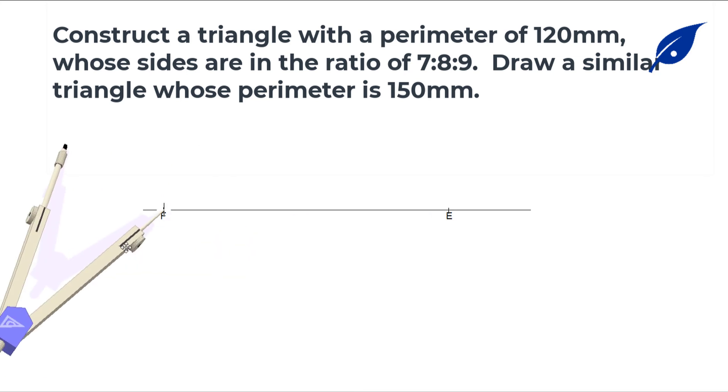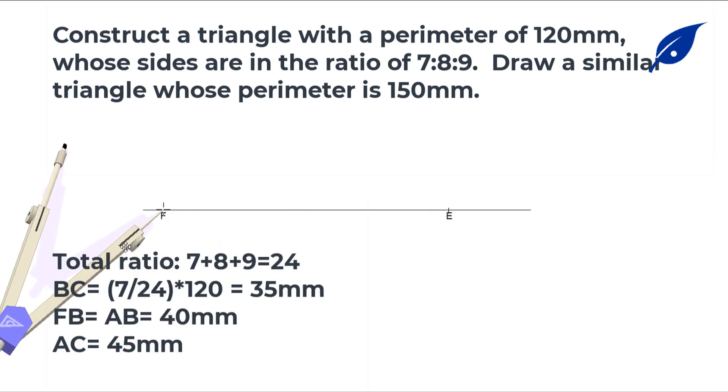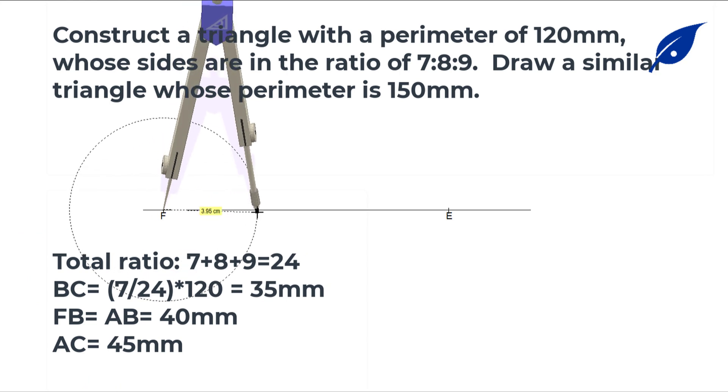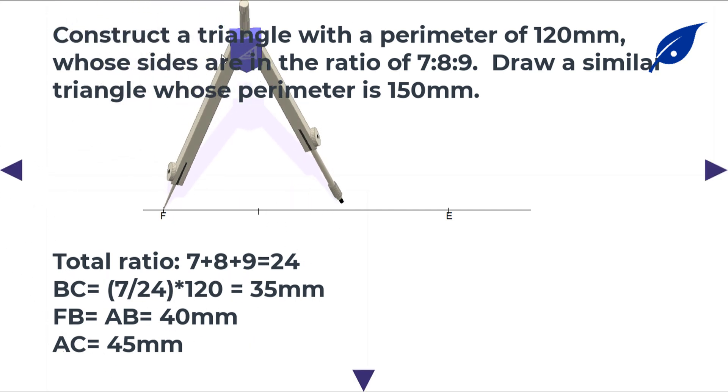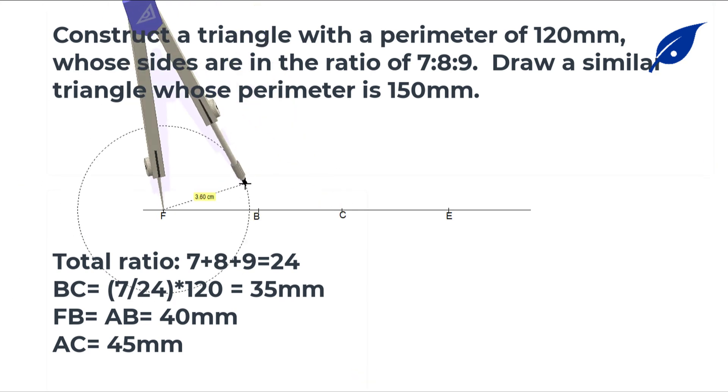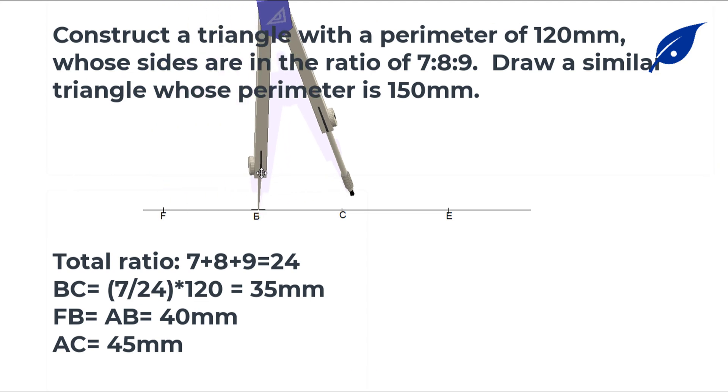Dividing to get each of the sides, we get 35, 40, and 45 millimeters respectively. Starting with the first side, which is the 8, we're going to have 40 millimeters. So AB is 40 millimeters, BC is 35 millimeters, and CE is 45 millimeters.